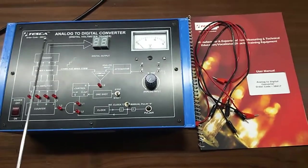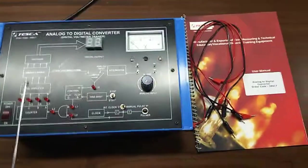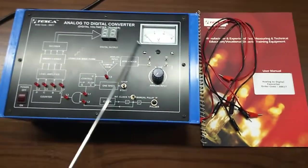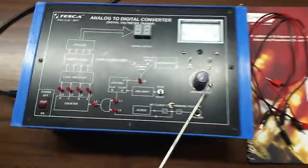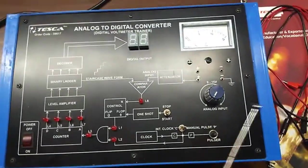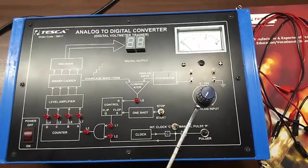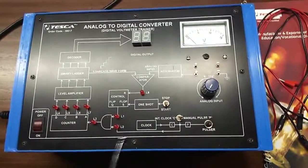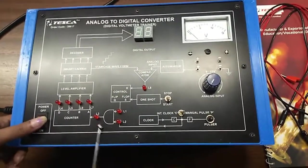This is the trainer K with the mimic diagram given on the panel. This is the 7-segment display, this is the inbuilt voltmeter. This is the analog input 0 to 15 volt. These are the LEDs and this is the AND gate.